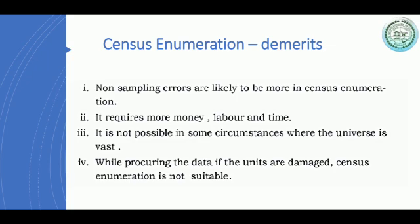The demerits of census enumeration are: first, non-sampling errors are likely to be more in census enumeration — the errors which do not happen in sampling will happen here. Second, it requires more money, labor, and time, because you have to go to each and every person and collect the information.